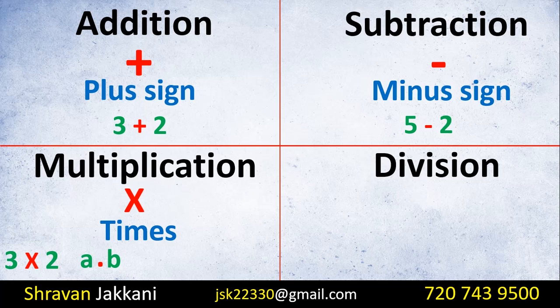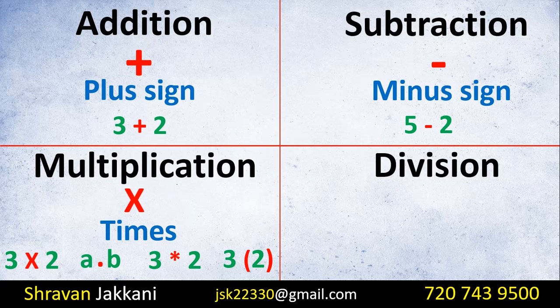We can use different symbols for multiplication: the cross symbol (×), a dot (·), the letter X, or an asterisk (*) — which is used in computers and the internet. In textbooks, we use the cross or dot. In algebra, using alphabets, we use brackets or write letters next to each other, and we reprint the symbol for each symbol used.